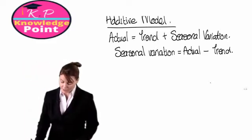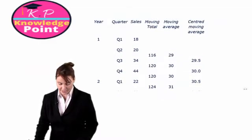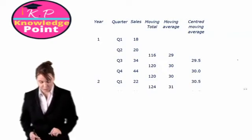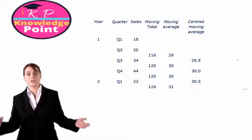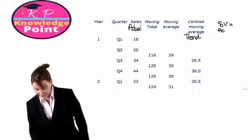We're going to continue with the same exercise from the previous session. We had three different years, sales for four quarters in each of those years, and we've already calculated our centred moving averages figures. Now we can use all of this to work out the seasonal variation. Our sales figures are our actual figures, and the centred moving average is our trend. So we can calculate our seasonal variation as actuals minus trend.